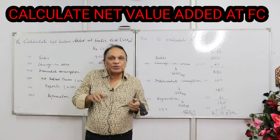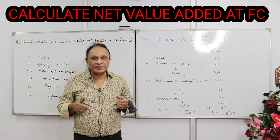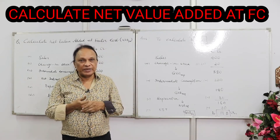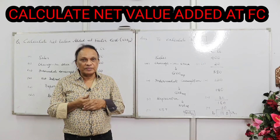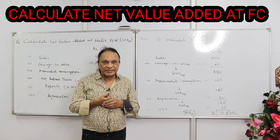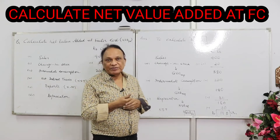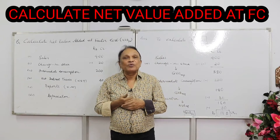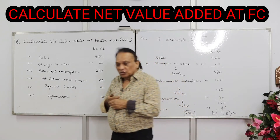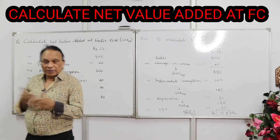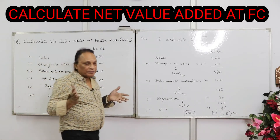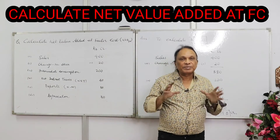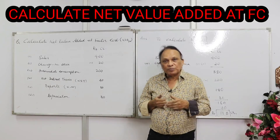Hi, welcome back to CBSE board economics. I'm Saddam. Today in national income accounting we'll do a numerical from value-added. Often times we have seen there will be a four-mark value-added numerical. They'll ask you to find out sometimes gross value added, sometimes net value added, sometimes at factor cost, sometimes at market price. I hope you recollect the formula.